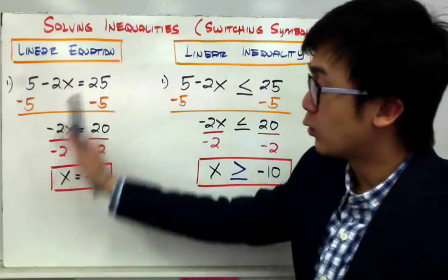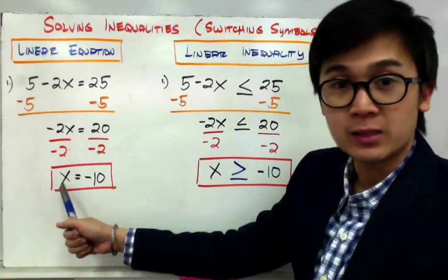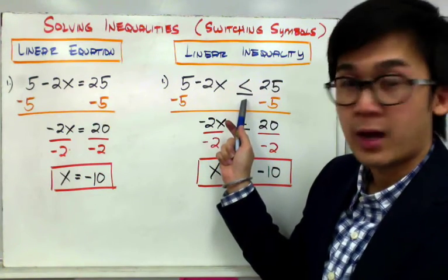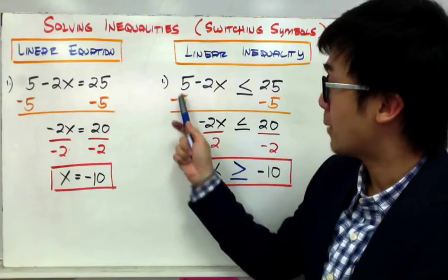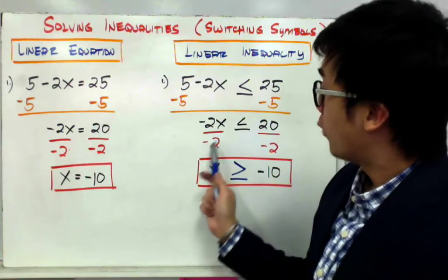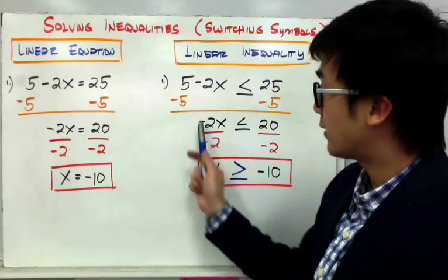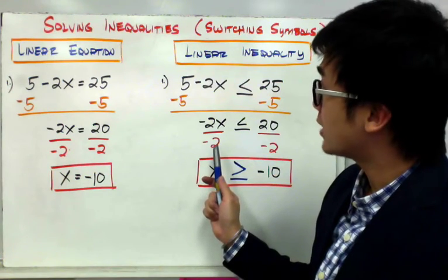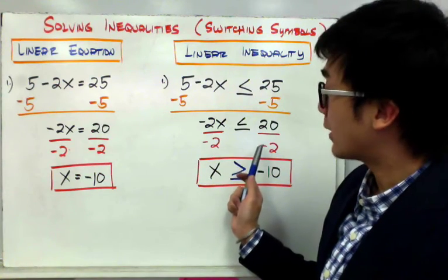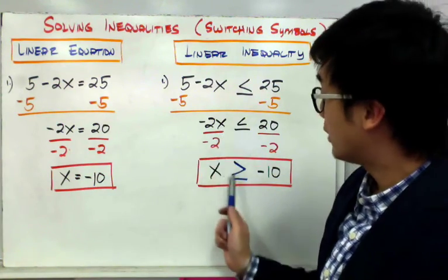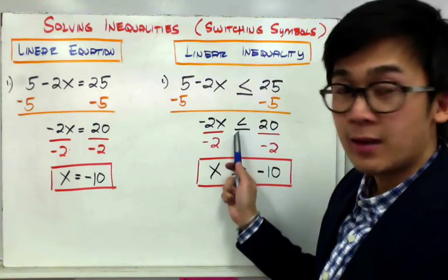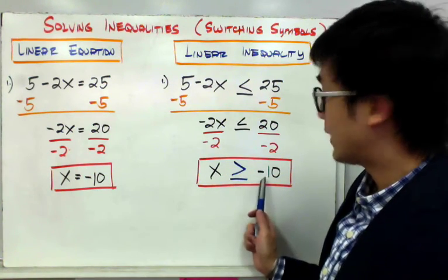Now in a linear inequality, let's say I have 5 minus 2x less than or equal to 25. To get x by itself, I subtract 5 on both sides, giving me negative 2x less than or equal to 20. Now I'm dividing negative 2 on both sides — this is the special case for a linear inequality. When you divide both sides by a negative number, you need to switch the symbol. So instead of x less than or equal to negative 10, you get x greater than or equal to negative 10.